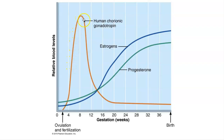There is a sharp decline in HCG levels at about the third month. That's because the trophoblast gives rise to the placenta. Once the placenta forms, it will start to secrete estrogen and progesterone, and so will no longer rely on the corpus luteum for those hormones.